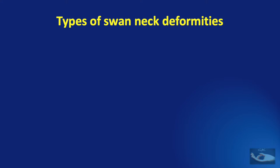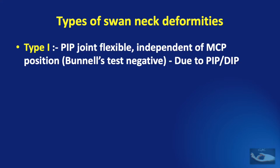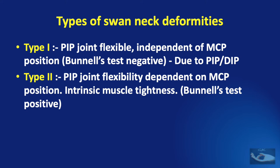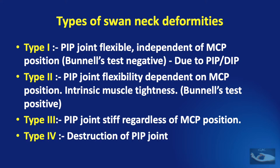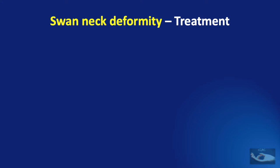Based on our examination, we find four types of swan neck deformities classified by Nalebuff et al. Type 1 is where the proximal interphalangeal joint is flexible and independent of metacarpophalangeal joint position — Bunnell's test is negative — and this type usually occurs due to palmar plate failure at the PIP joint, which may or may not be associated with failure of the flexor digitorum superficialis. In Type 2, PIP joint flexibility is dependent on the metacarpophalangeal joint position — intrinsic muscles are tight, Bunnell's test is positive. In Type 3, the PIP joint is stiff regardless of MCP joint position. In Type 4, the PIP joint has been destroyed.